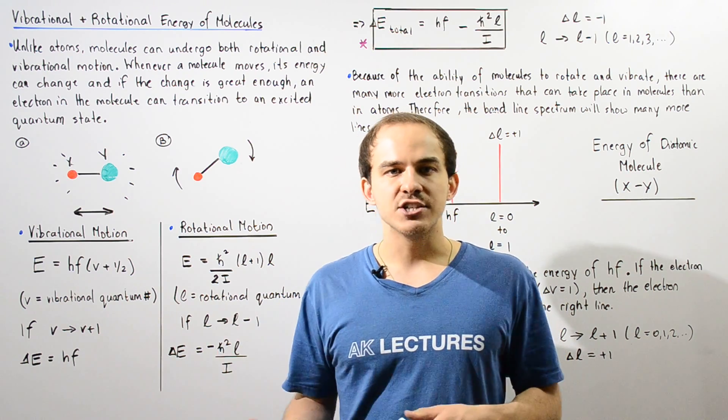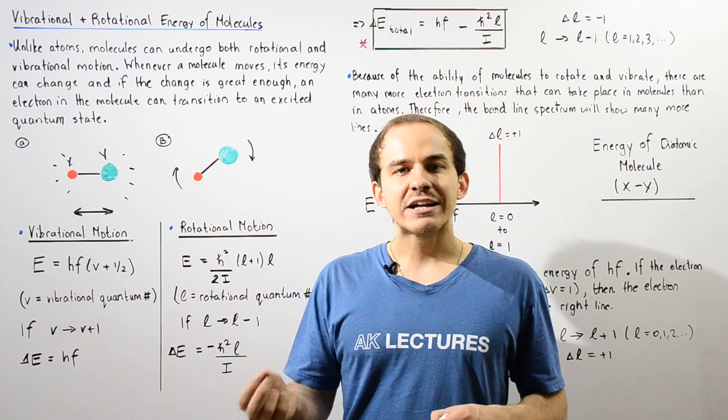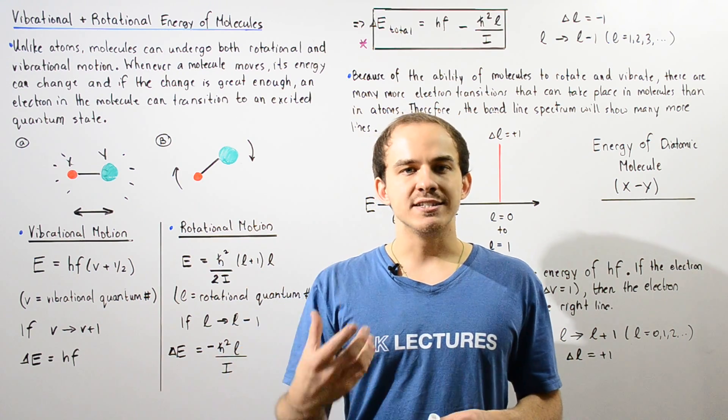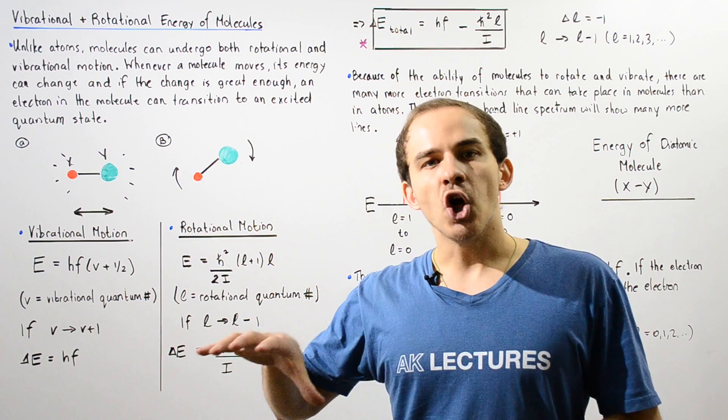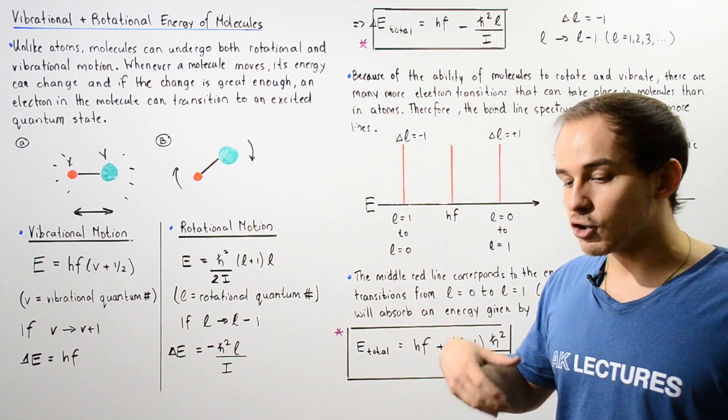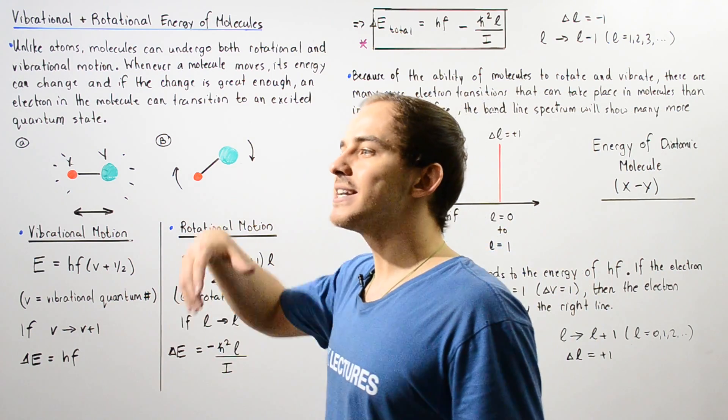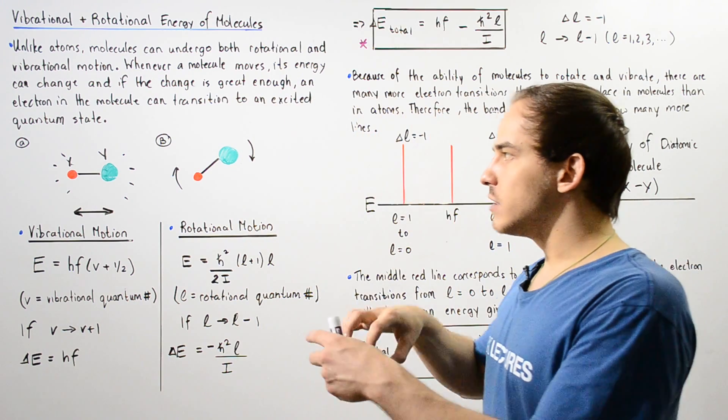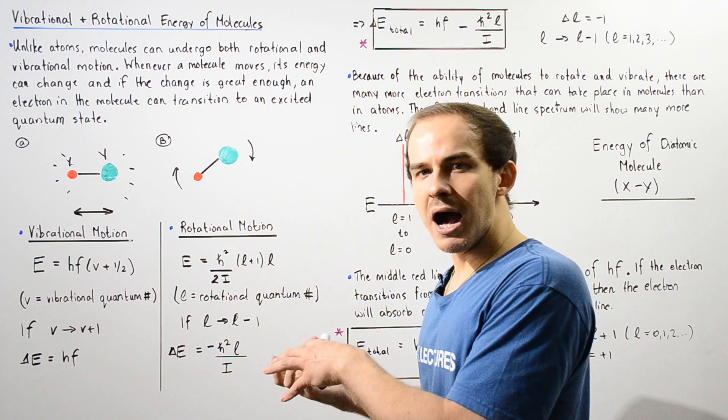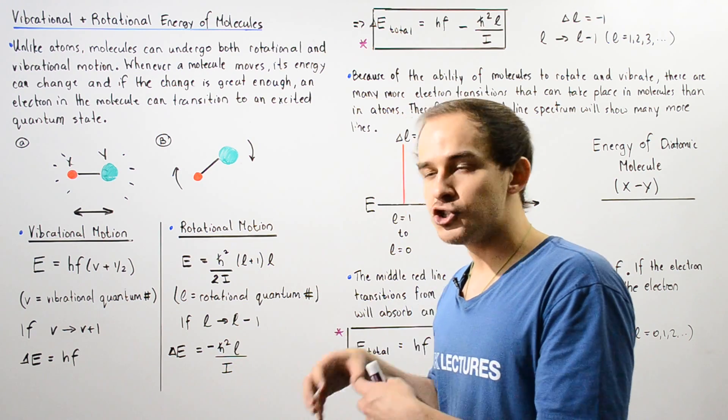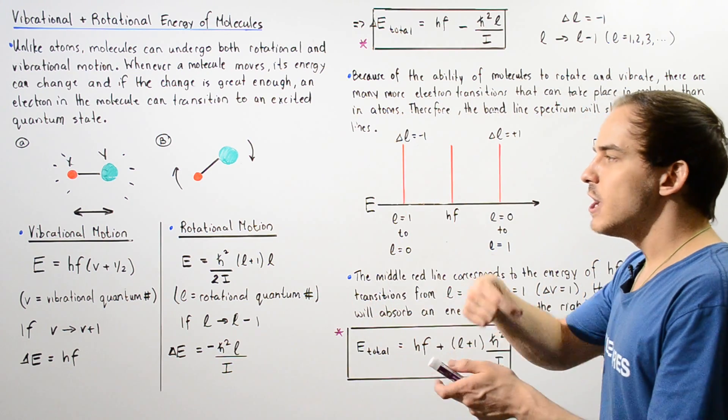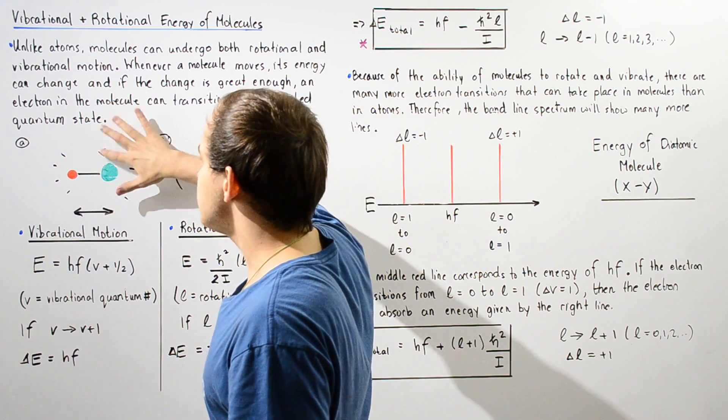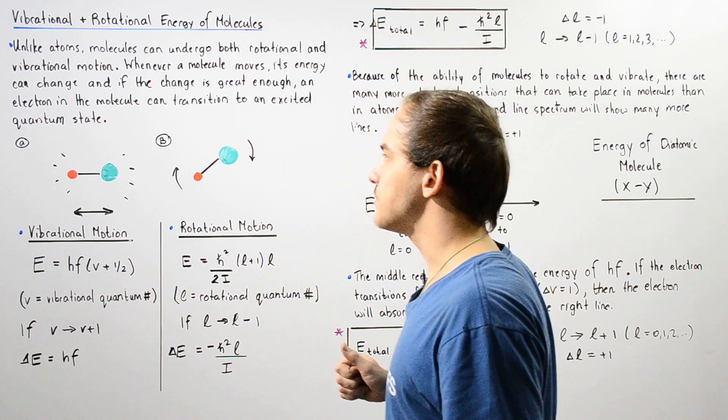And if the change in energy is great enough, our electron within the molecule can gain that energy and transition from a lower energy state, let's say the ground quantum state to an excited quantum state. Now we have two types of motion inside our molecule that can basically change the energy by enough for that electron to actually transition between our two quantum states.